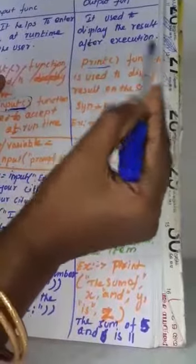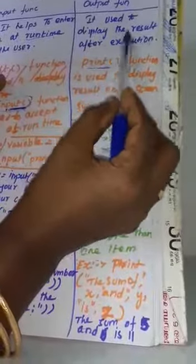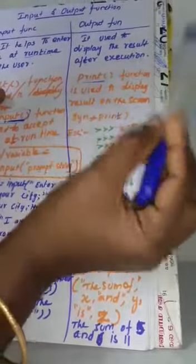So, this is the input function. Next, another function is output function. What is output function? It is used to display the result after execution. It is used to display the result after execution time.